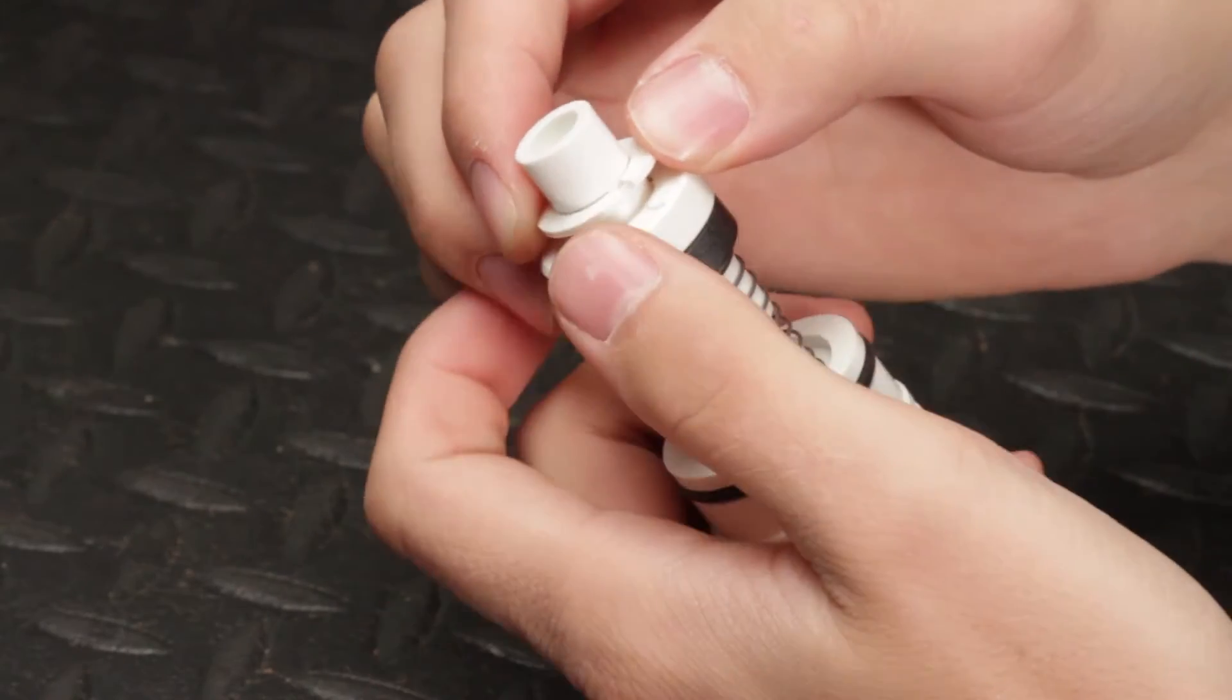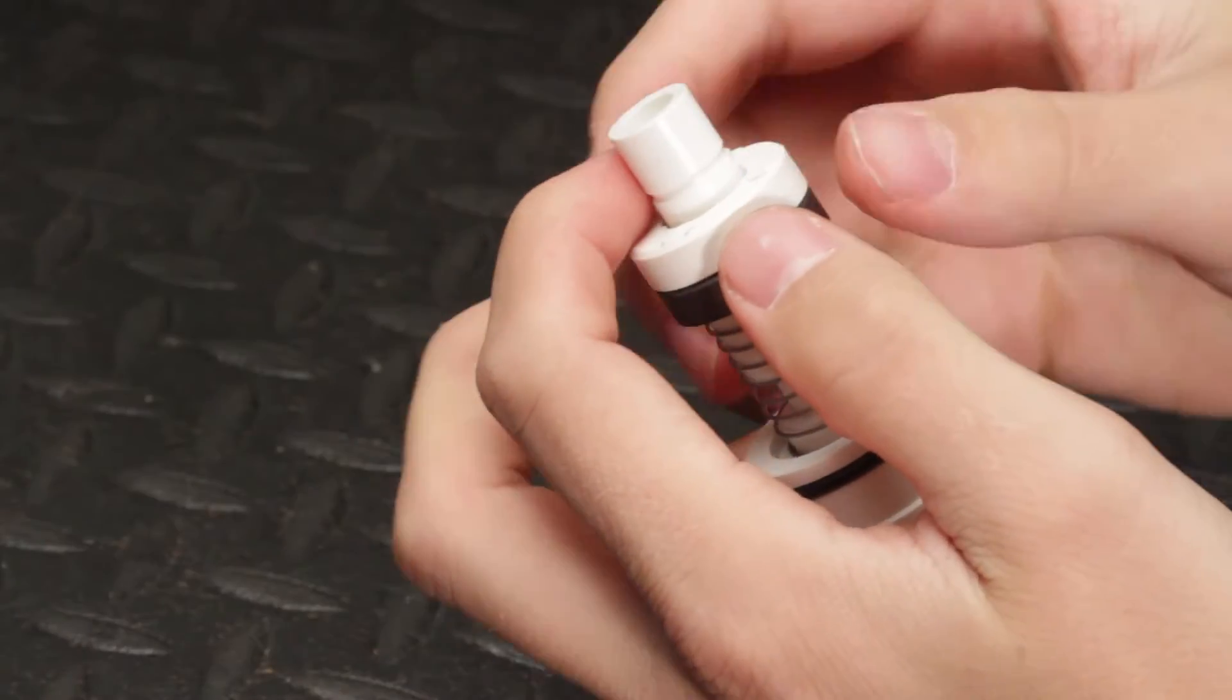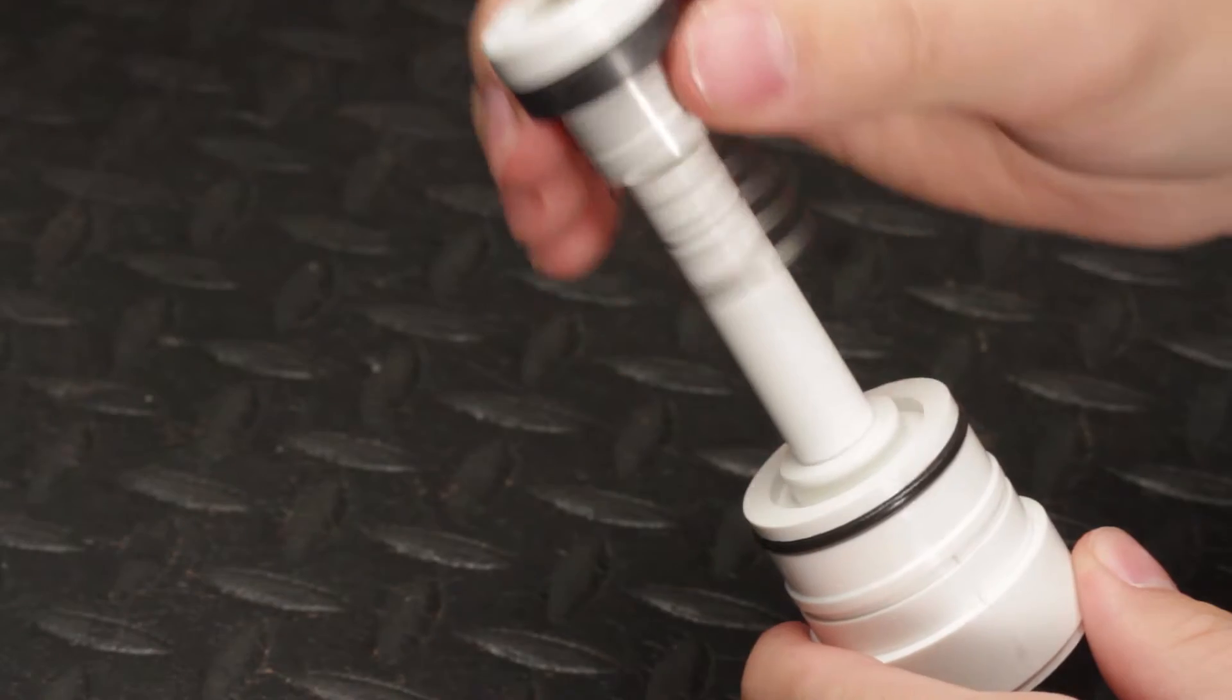Next, remove the locking clip carefully as not to deform its shape. Then remove the shuttle magnet and spring assembly.